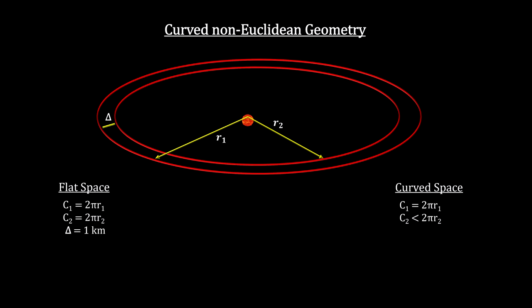But because of our positive curvature, if we were to measure the circumference with a radius that is one kilometer shorter than the first, we'd find that it is less than 2π times the shorter radius.